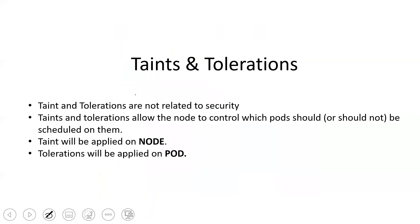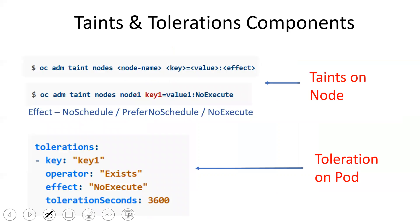Taints and tolerations are not related to security — they are related to restrictions. Taints and tolerations allow the node to control which pods should or should not be scheduled on them. Taint will be applied on the node and tolerations will be applied on the pod. The main components are key, value, effect, and operator.